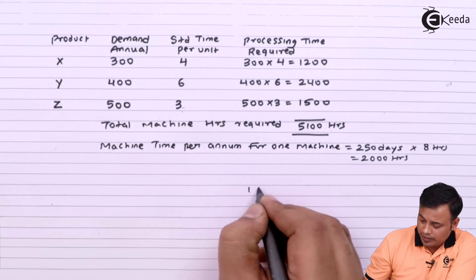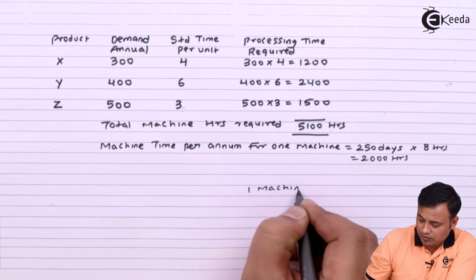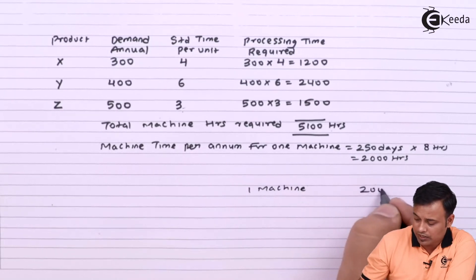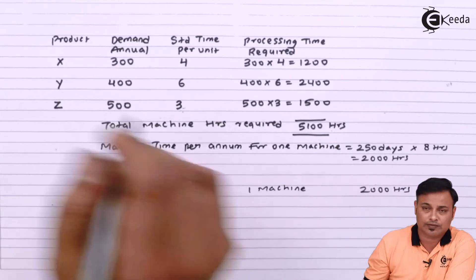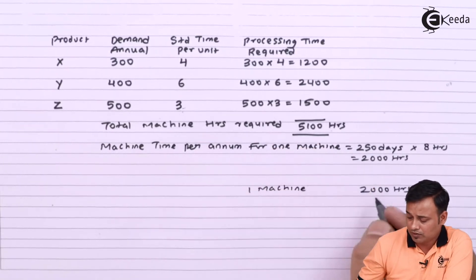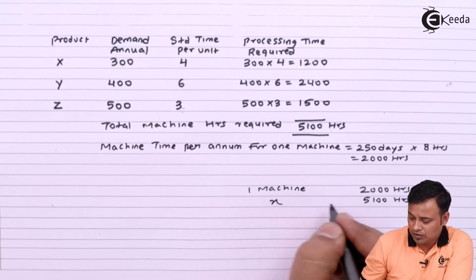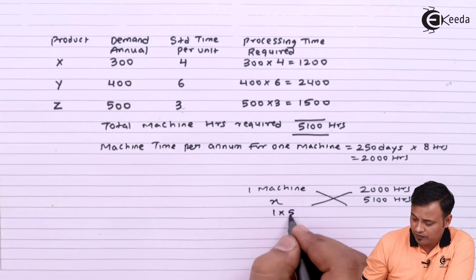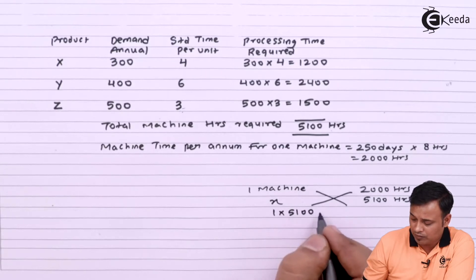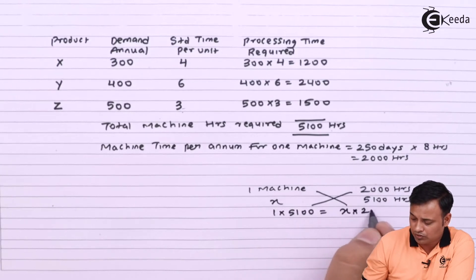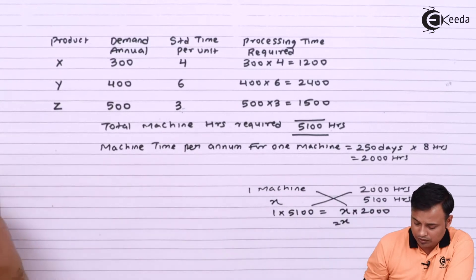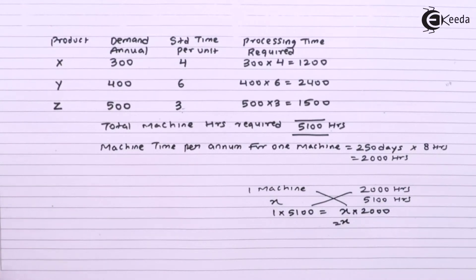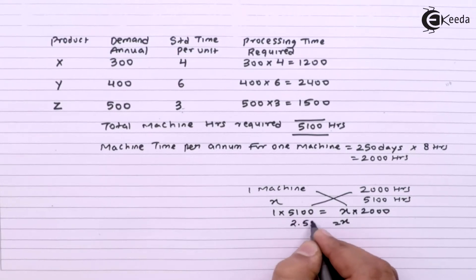If one machine gives 2000 hours and we need 5100 hours total, you can simply cross-multiply: 1 × 5100 = x × 2000. So x shall be 5100 divided by 2000, which is 2.55. Here x is the number of machines required.